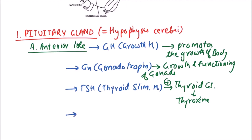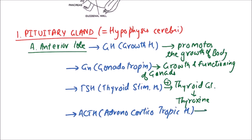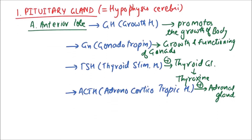The next hormone is ACTH, that is adrenocorticotropic hormone. It stimulates the adrenal gland, from which hormones like mineralocorticoids and glucocorticoids are released. The next lobe is the intermediate lobe.